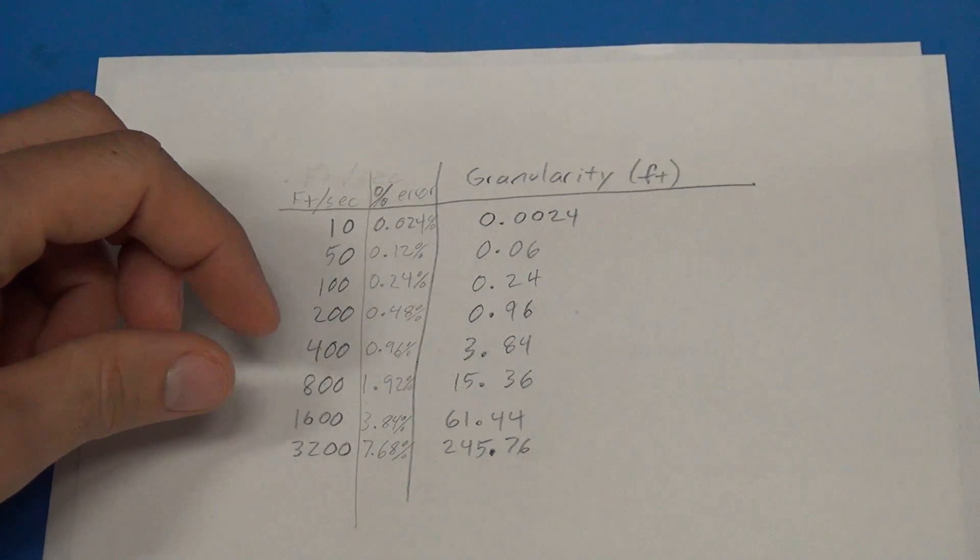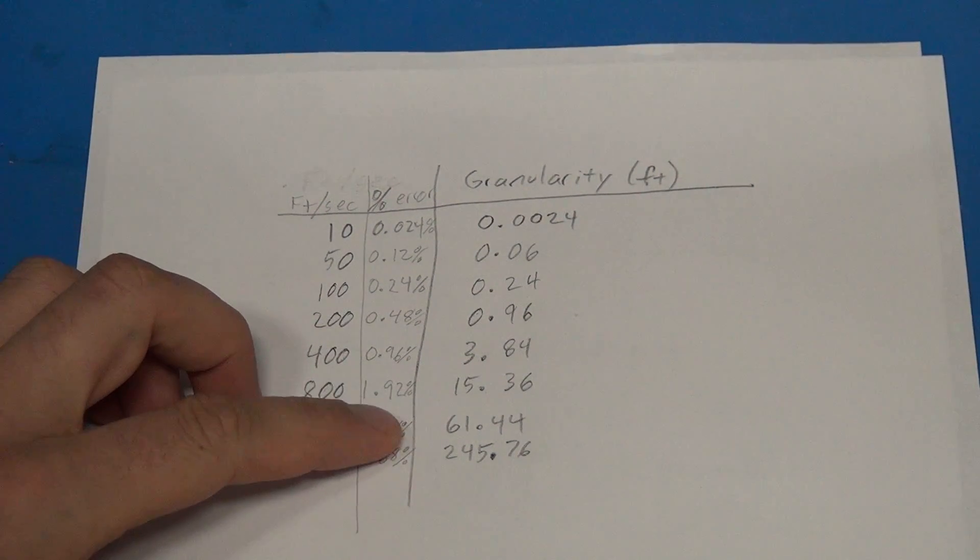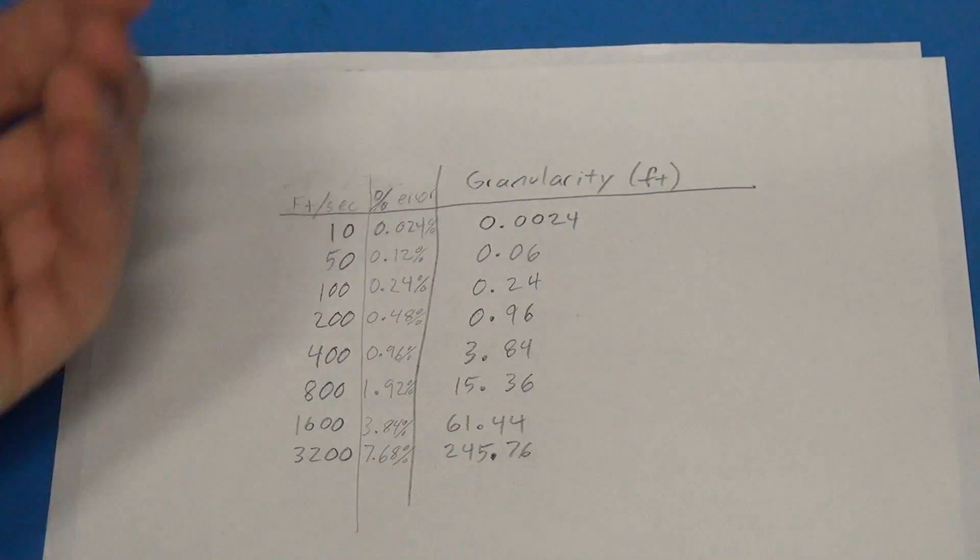So I typically use 15 inches. So if I'm using 15 inches and I have this 1.92 percent of error, that gives me about a quarter of an inch of error on the projectile. And that's actually what we're seeing.